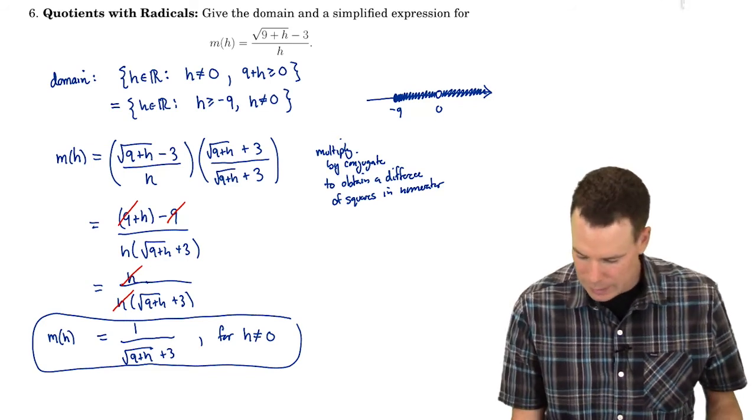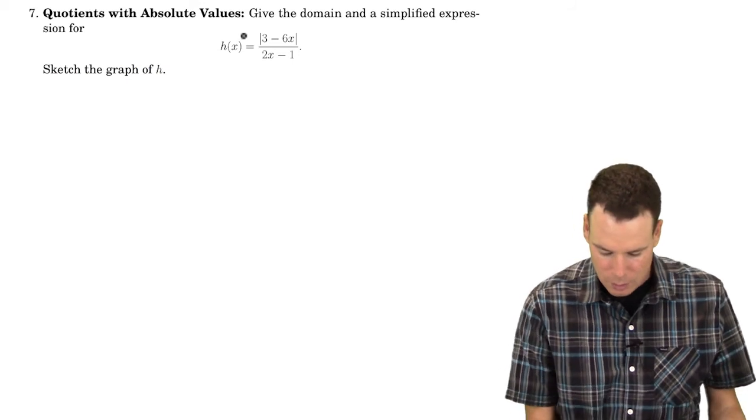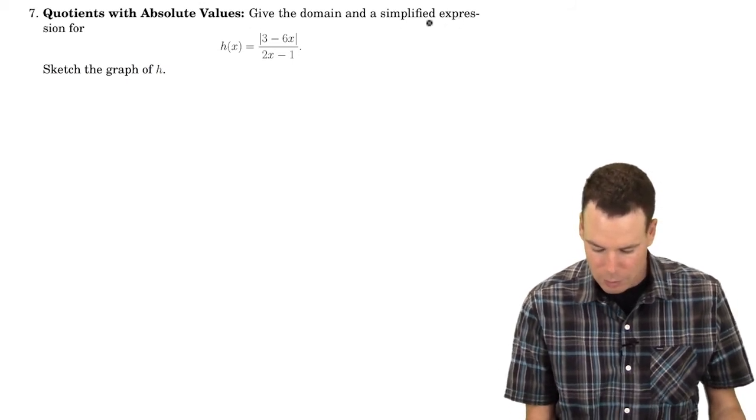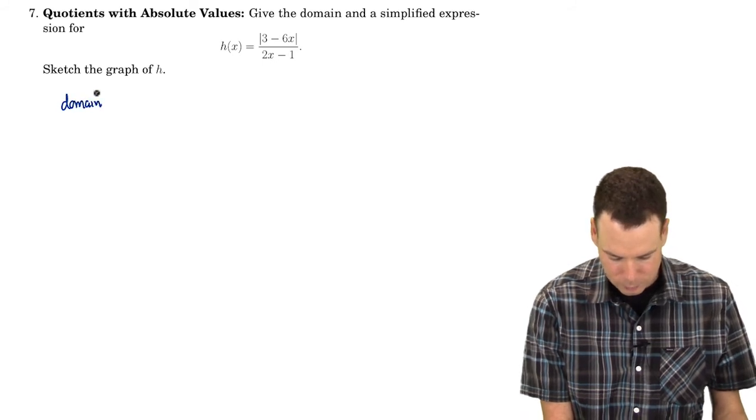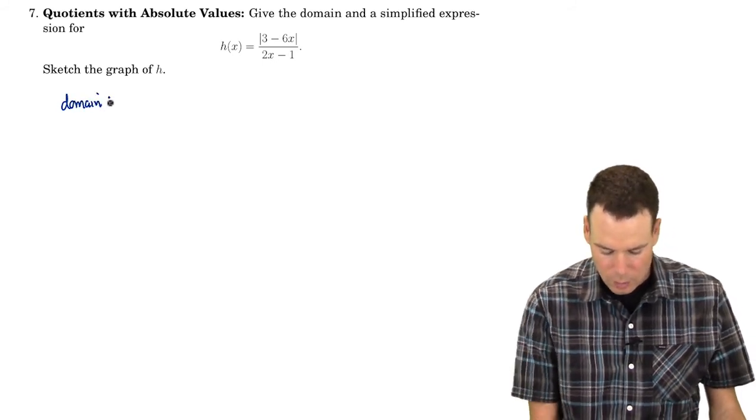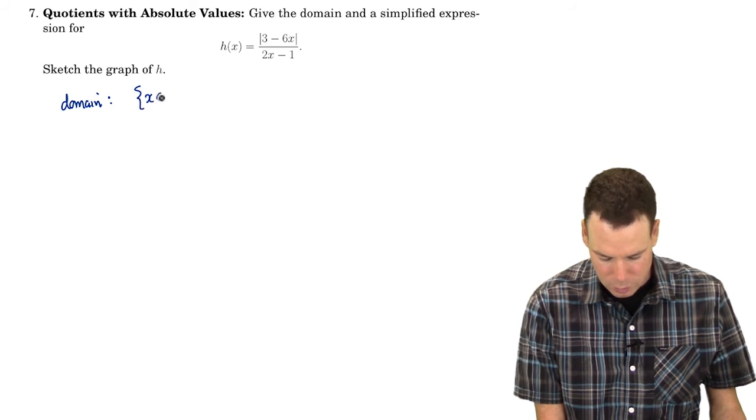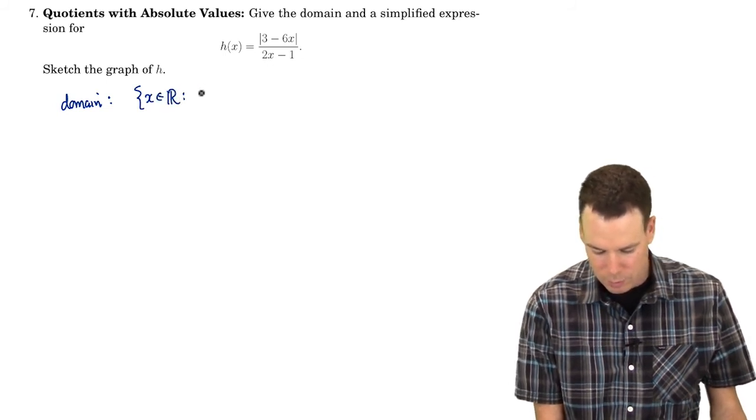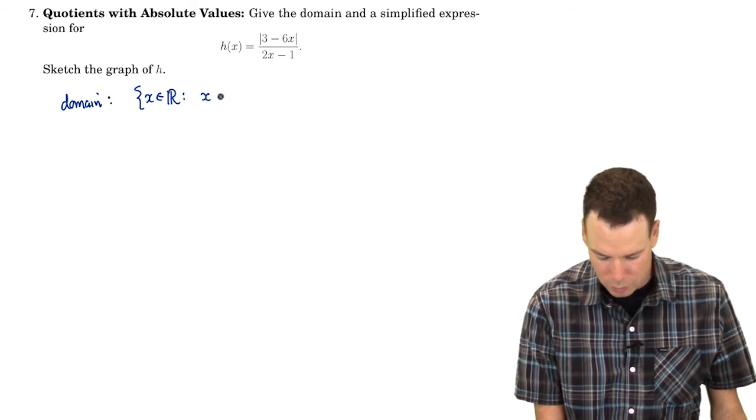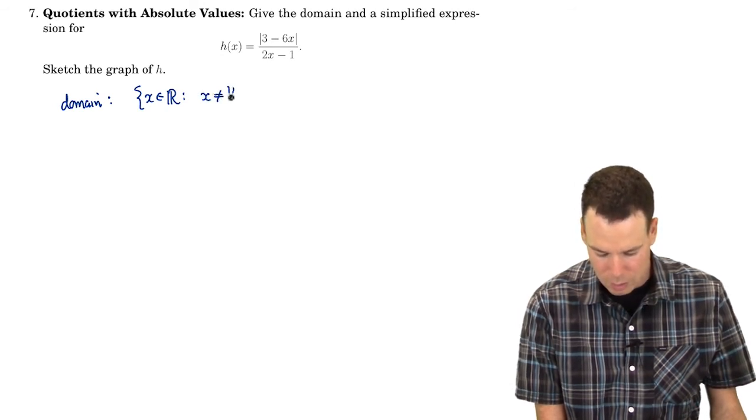So let's look at the last example. So give a domain give the domain and a simplified expression for this function. So what is our domain? Well again it's a set of all x values which makes sense to plug into it. It doesn't make sense to plug in something where the denominator vanishes. Everything else will work out fine so x cannot be 1 half.